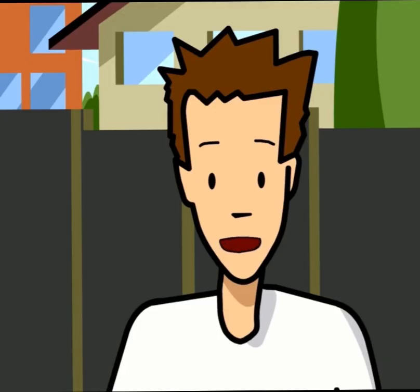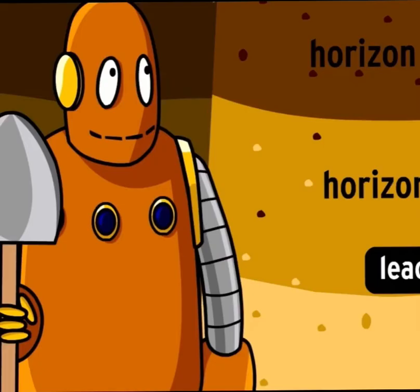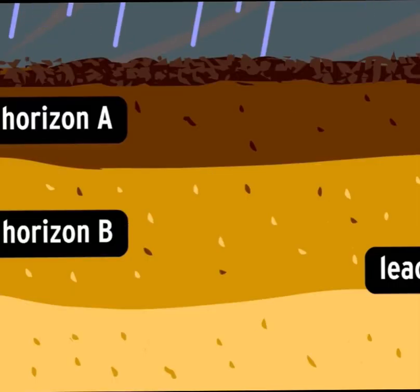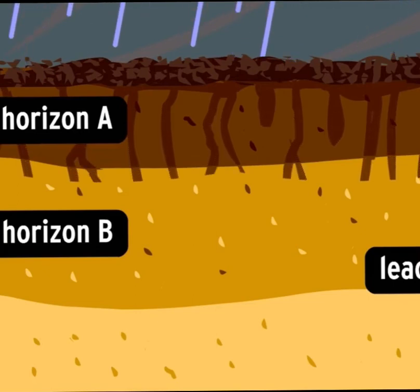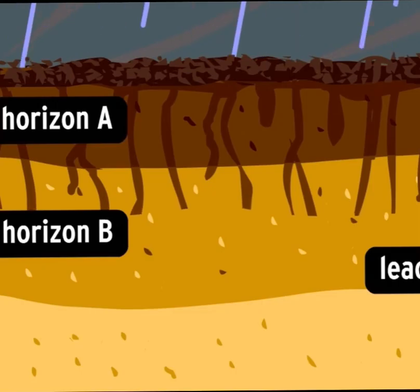Horizon B contains some organic material washed down from the A horizon through leaching. When water soaks into the topsoil, it reacts with the humus to form an acid. This acid dissolves some of the nutrients in the A horizon and drips down into the B horizon, making it a bit more fertile.